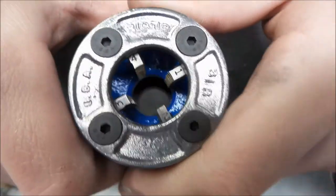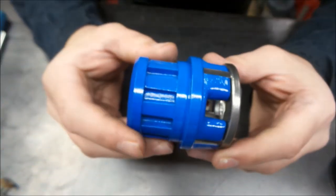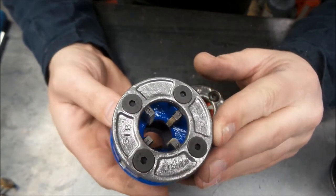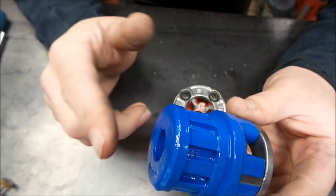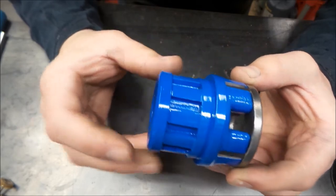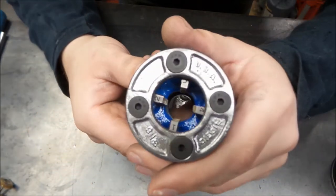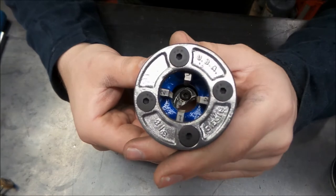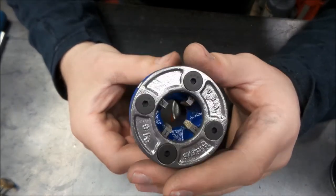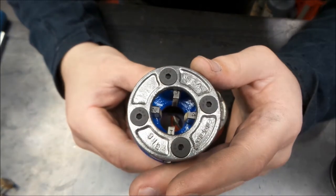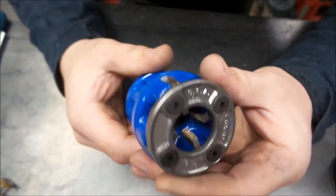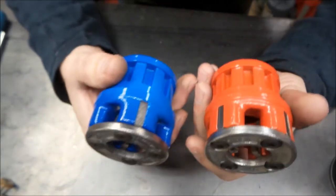The advantage to that is if you needed to start something that was shorter and you didn't have the ability to put this long collar over the pipe, you could start your threads or chase your threads if you're cleaning threads on something. This would be a good tool for that, because if it's short threads and you just need to chase them, this would be a good tool for that.